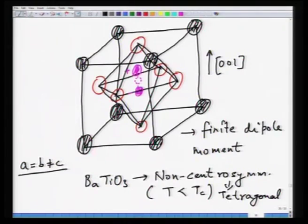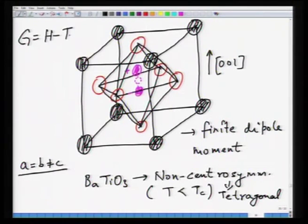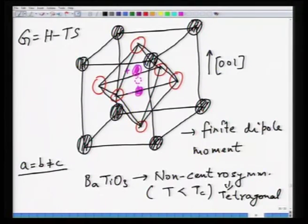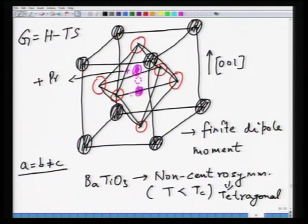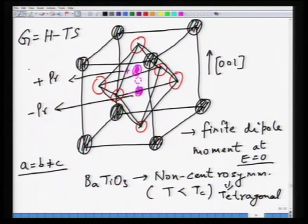This configuration is favored because the free energy G = H − TS is at a minimum when the titanium atom is shifted in either the positive or negative z direction, compared to sitting at the center. The plus-a state corresponds to +Pr and the minus-a state corresponds to −Pr at zero field. There is a finite dipole moment at E = 0, characterized by these two states.